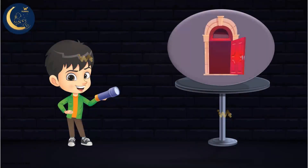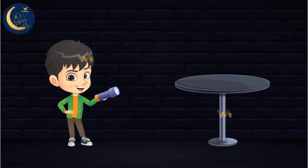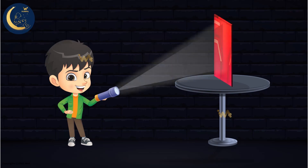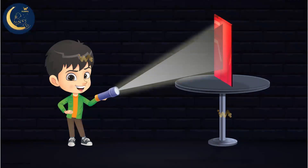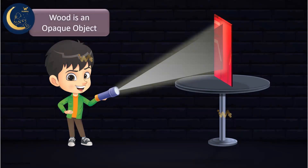Let's begin with the wooden door. We will take a piece of it and shine a light through it. Do you notice anything, my friends? Great job! The wood does not allow light to pass through, so the wood is an opaque object.